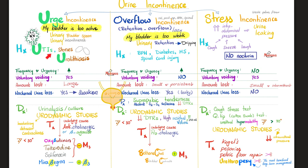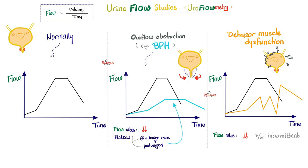Urge incontinence: think of it as an infected, hyperactive bladder — everything is hyper, this bladder is crazy. Now let's look at uroflometry graphs. Here is the normal pattern. Outflow obstruction — such as cervical cancer, benign prostatic hyperplasia, a stone, urethral stricture from birth, or post-surgical fibrosis — all of these patients will present with a similar pattern.